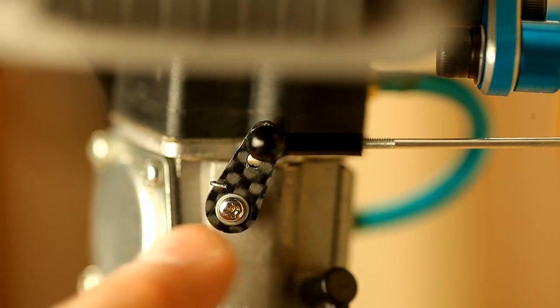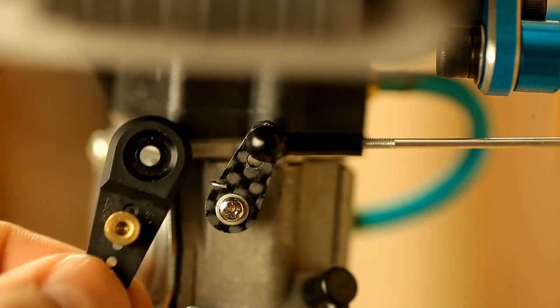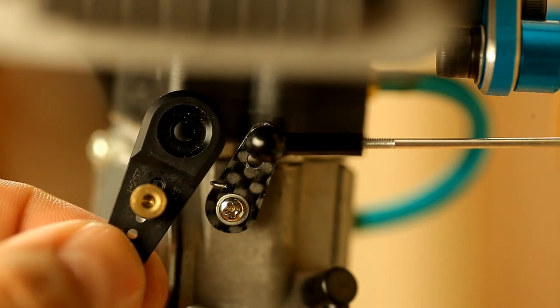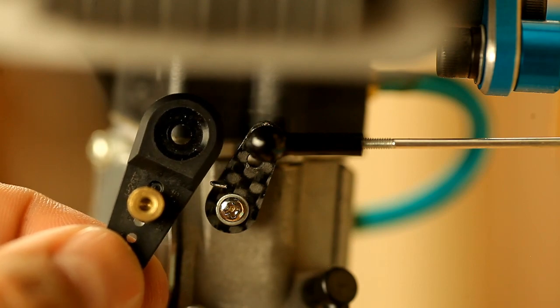Since the arm on our throttle is pretty short, it's about a half inch from end to end, we're going to use the first hole on our servo arm to equal that same range so we have a one to one ratio.